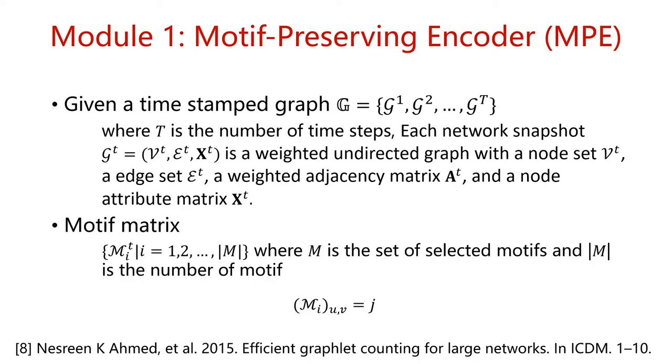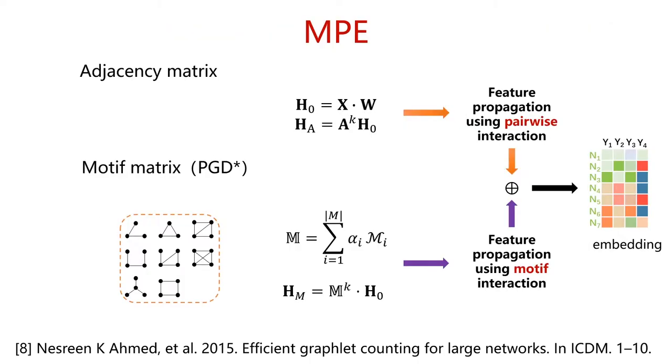Following previous research, we use motif metrics to represent the high-order structure of the network. Elements in the motif metrics indicate that the edge between node U and node V participates in the i-th motif type j times. MPE will run on the network at each independent time step. We use the power of the adjacency matrix and the motif metrics to propagate the features of the node. In this way, MPE will capture the direct interaction and high-order structure proximities between nodes from multiple perspectives.